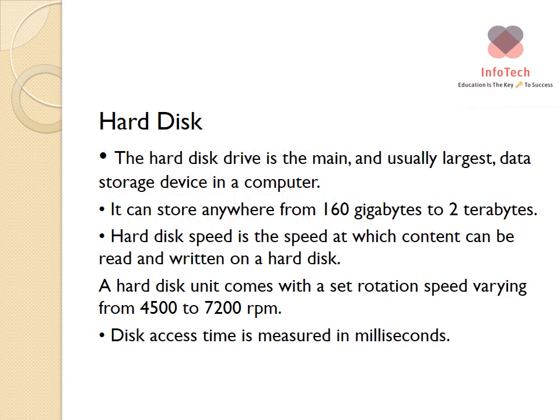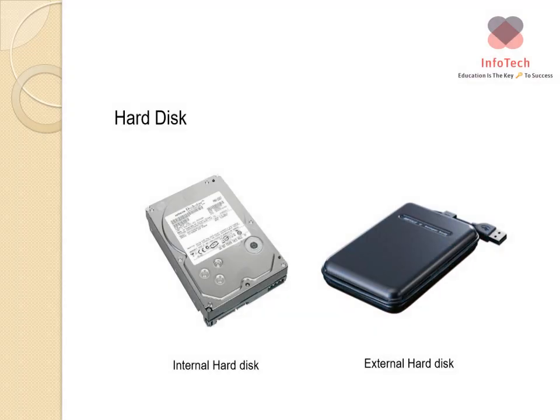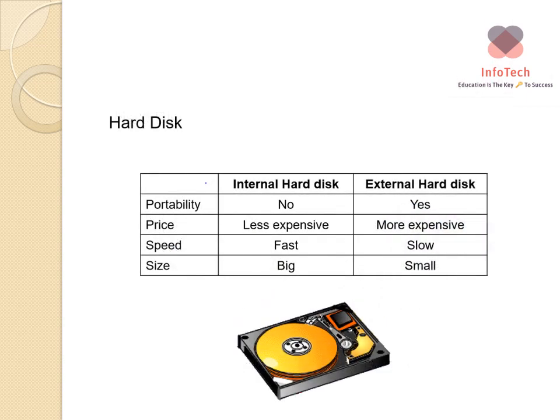Let us look at the hard disk. A hard disk drive is the main and usually largest data storage device in a computer. It can store anywhere from 160 gigabytes to 2 terabytes of data and even more with today's technology. Hard disk speed refers to the speed at which content can be read and written, ranging from 4,500 to 7,200 RPM (revolutions per minute), with access time measured in milliseconds. Here is a visual representation of both an internal and external hard disk.